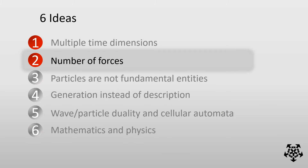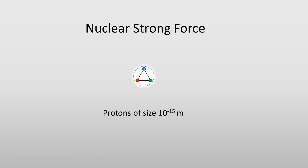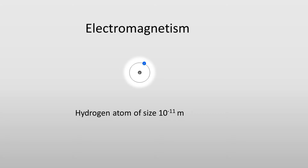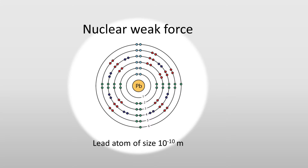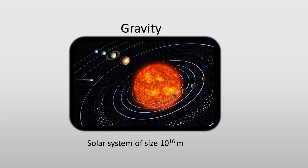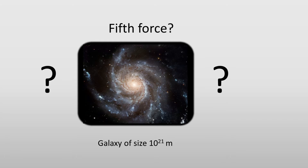How many fundamental forces — or more properly, interactions — are there? In decreasing order of strength: the nuclear strong force, for example responsible for forming protons; electromagnetism, together with the strong force allowing hydrogen atoms; thirdly the nuclear weak force, together with the previous two allowing heavier atoms like lead; and finally gravity. Sometimes a fifth force is suggested, but this remains highly speculative.